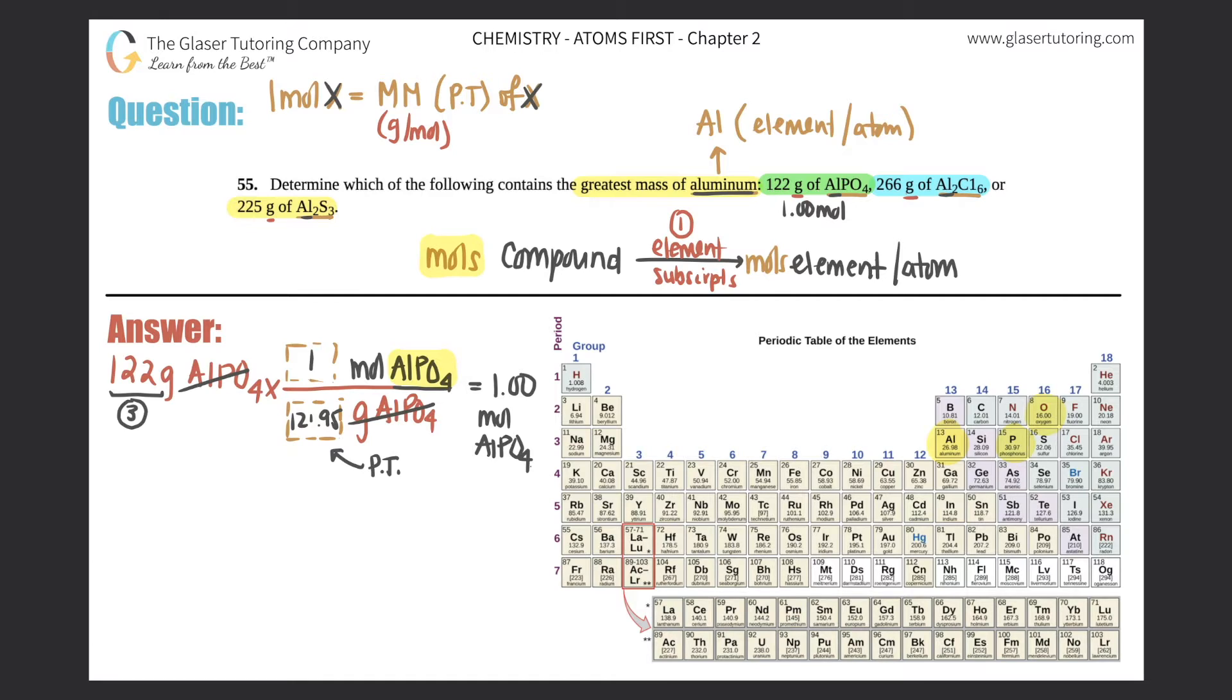Next step, we've got to do 266 grams of Al2Cl6. Times that, grams of Al2Cl6 and then moles of Al2Cl6. Now in this question which I got from the OpenStax, this looks like a 1, but I'm assuming that it's supposed to be chlorine. So one mole of anything equals the molar mass, which is found on the periodic table. So now we need two aluminums, so 2 times 26.98, and then chlorine is right over here, so we're going to be taking that number. So this plus 6 times 35.45.